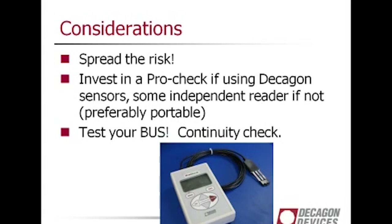You need to think about troubleshooting because sensor failures do happen — rodents chew cables, and we have about a one to one-and-a-half percent failure rate with Decagon sensors. So if you're putting 100 sensors out, odds are you're going to have a problem with one sensor, and that can be a big deal in SDI-12. I recommend having an independent way to test sensors. If you're using Decagon sensors, I highly recommend a ProCheck. It's nice to be able to go out, unplug one sensor, test it, and make sure it's doing what it's supposed to.